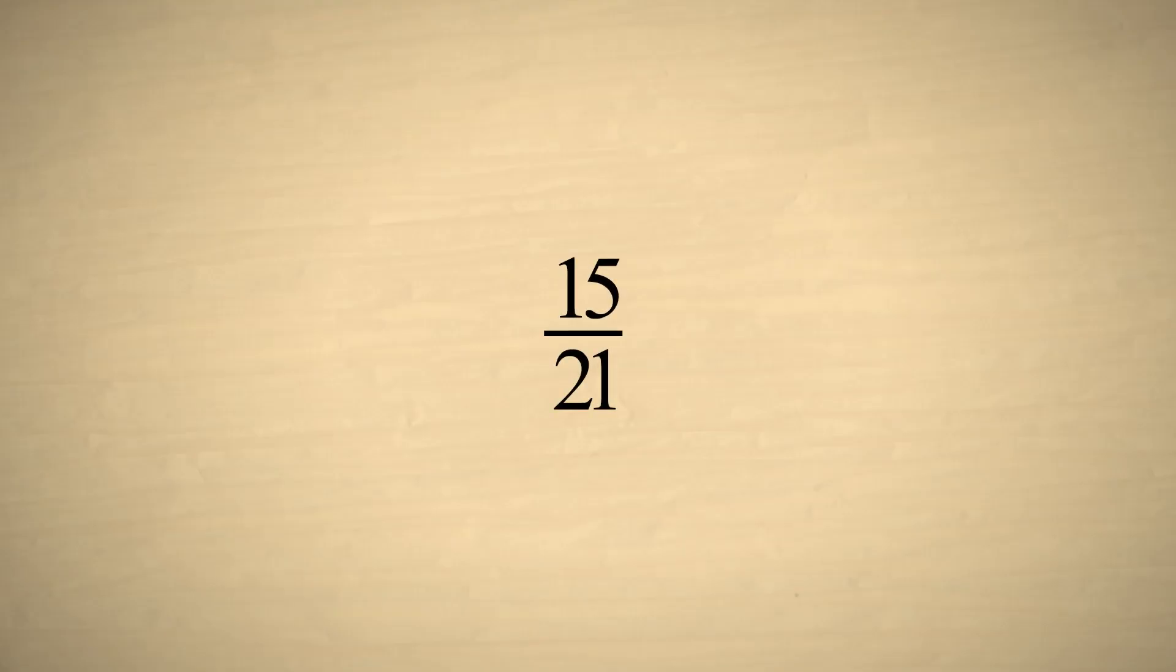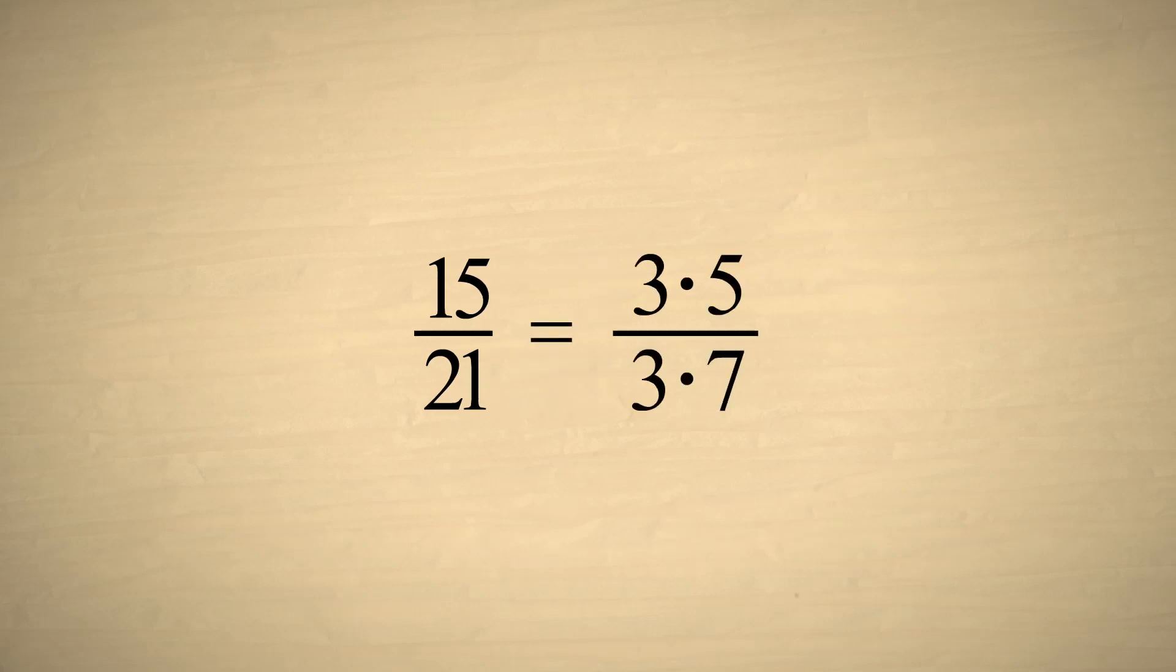The surest way to determine whether or not a fraction can be reduced is to factor the numerator and denominator. For example, say we wish to determine if the fraction fifteen-twenty-firsts can be reduced.